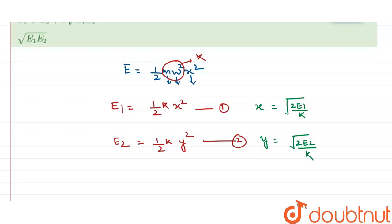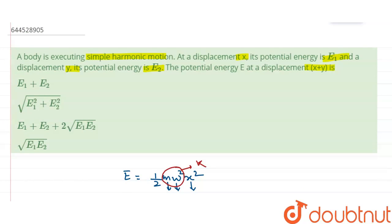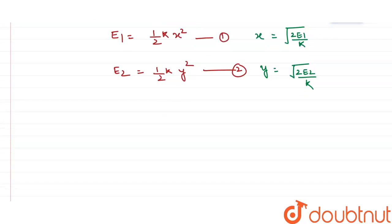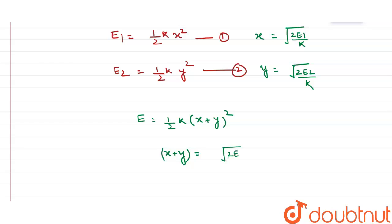Now they are asking about energy E at a displacement of x plus y. That means I can write the energy for displacement (x + y) as E = ½k(x + y)². So from here, x + y = √(2E/k). We have the individual values of x and y, so I will substitute them into this equation.